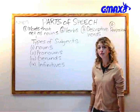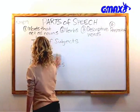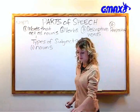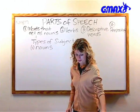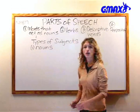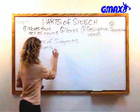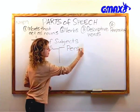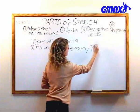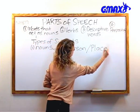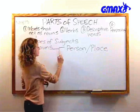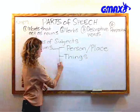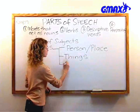We're going to start off with nouns. There are three types of nouns: a person or a place, things, and the third is concepts or emotions.